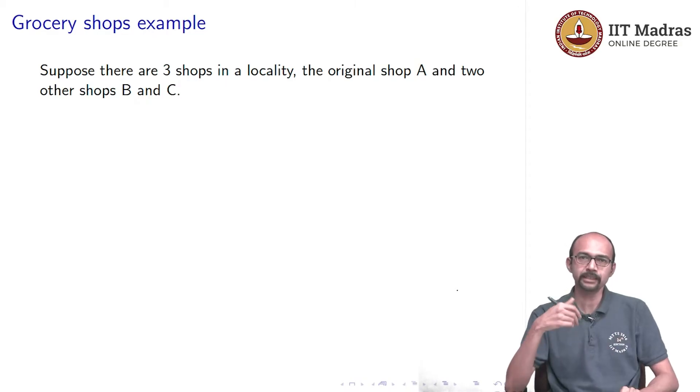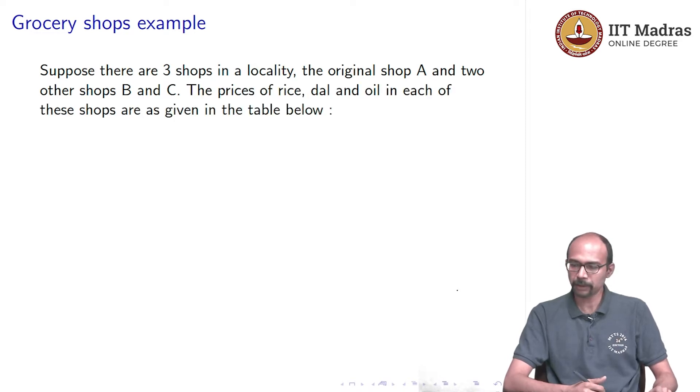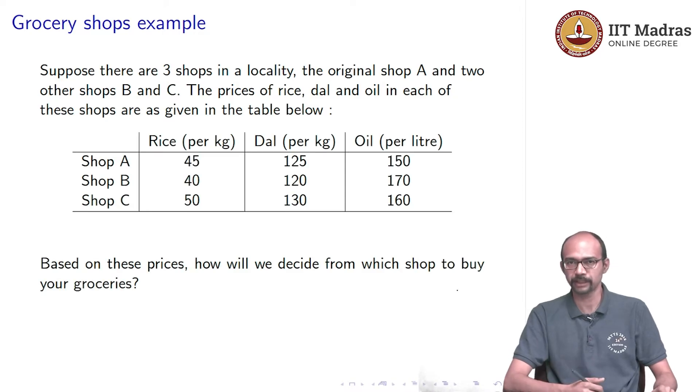Let us move on to a slightly more elaborate example. We use the same data that we have before, we have shop A, but now in this locality, Malgudi, or this town Malgudi, we have the original shop A and we have two other shops, B and C as well. And the prices of rice, dal and oil in each of these shops is given in this table.